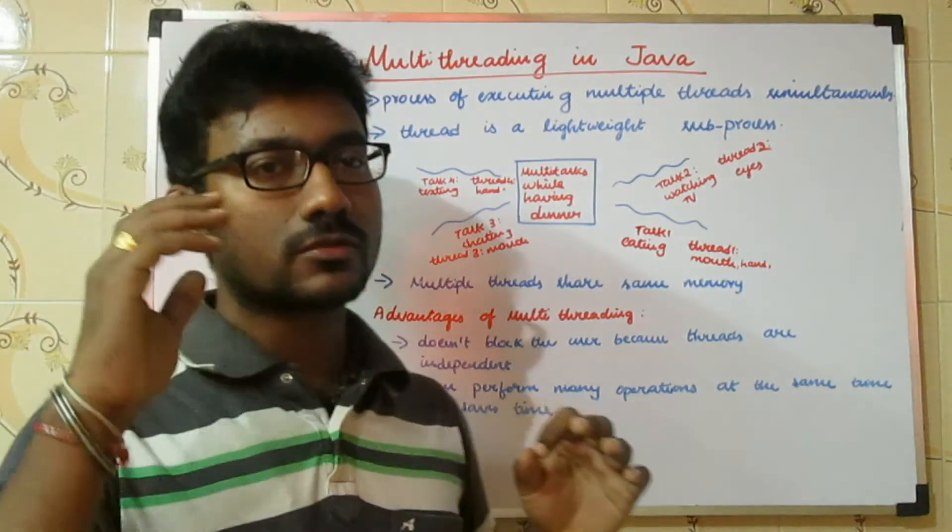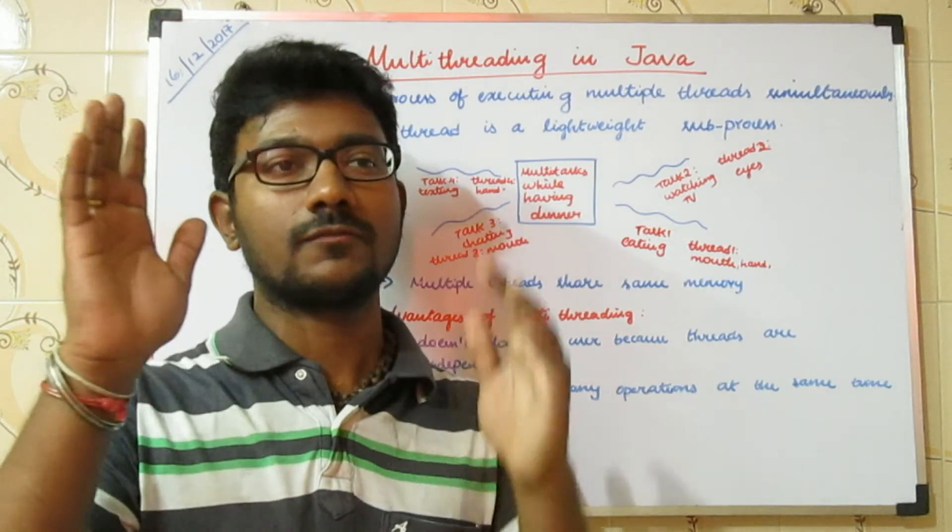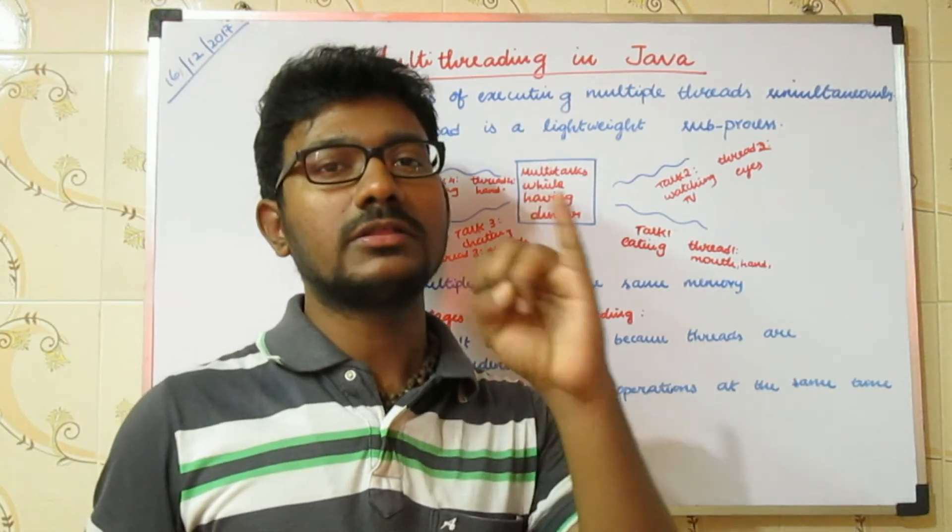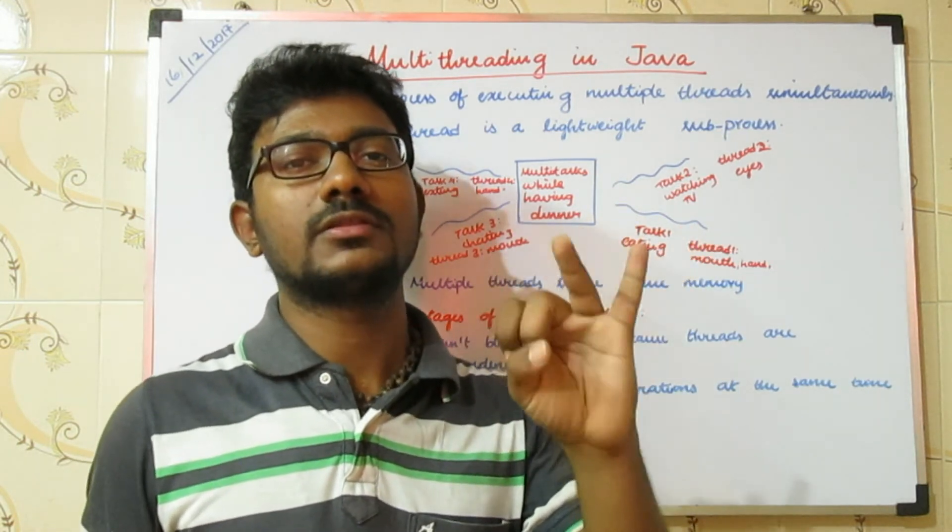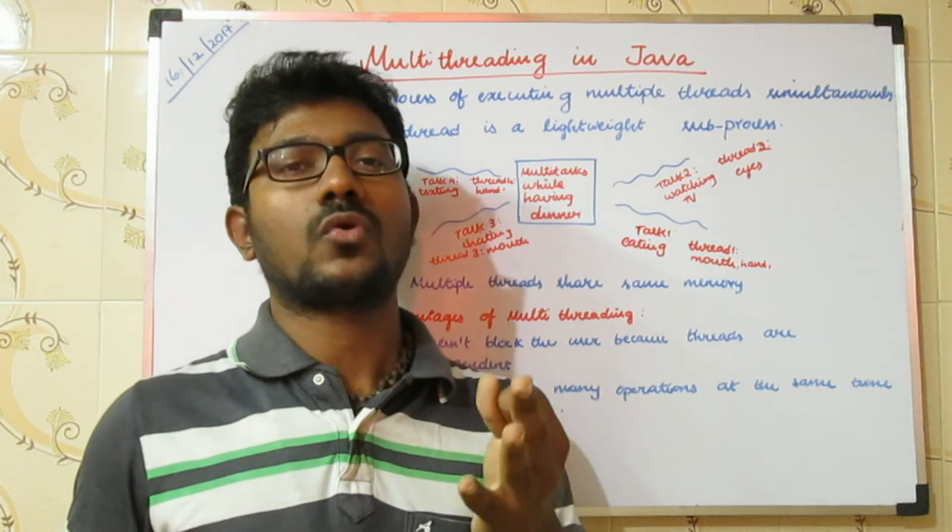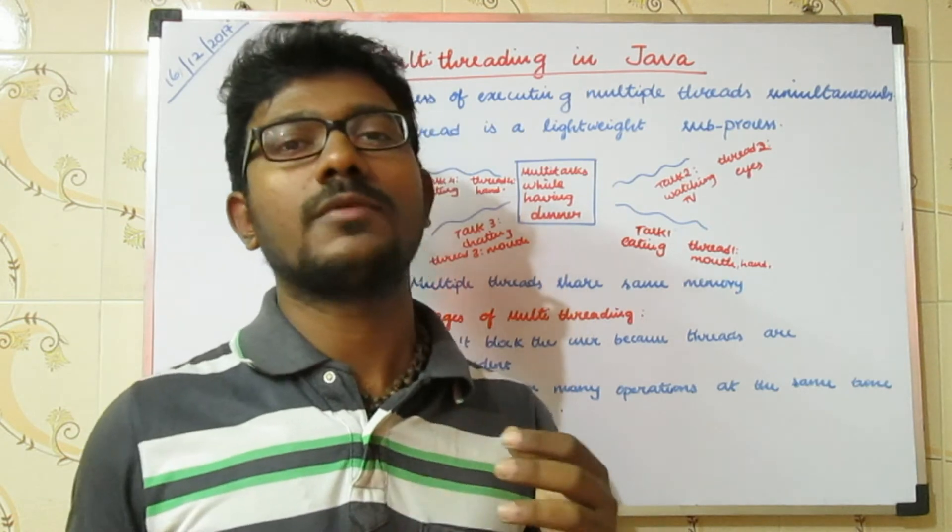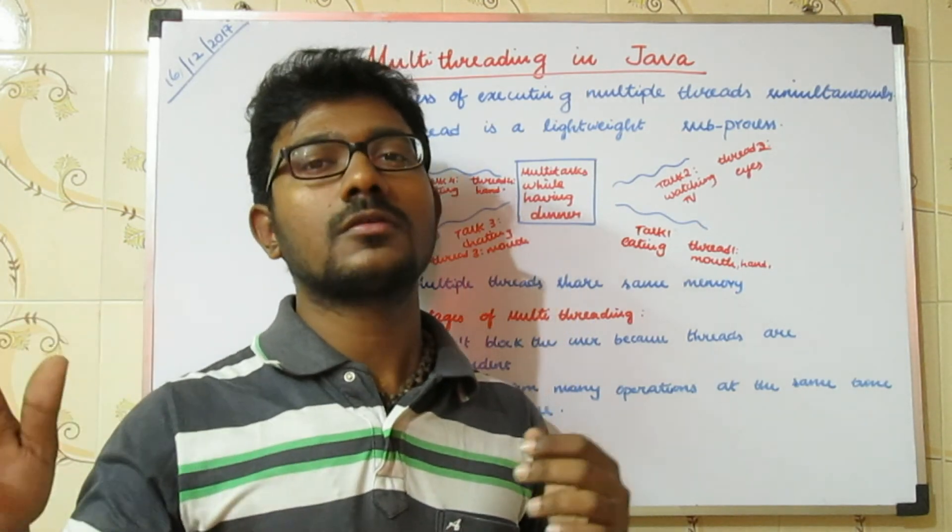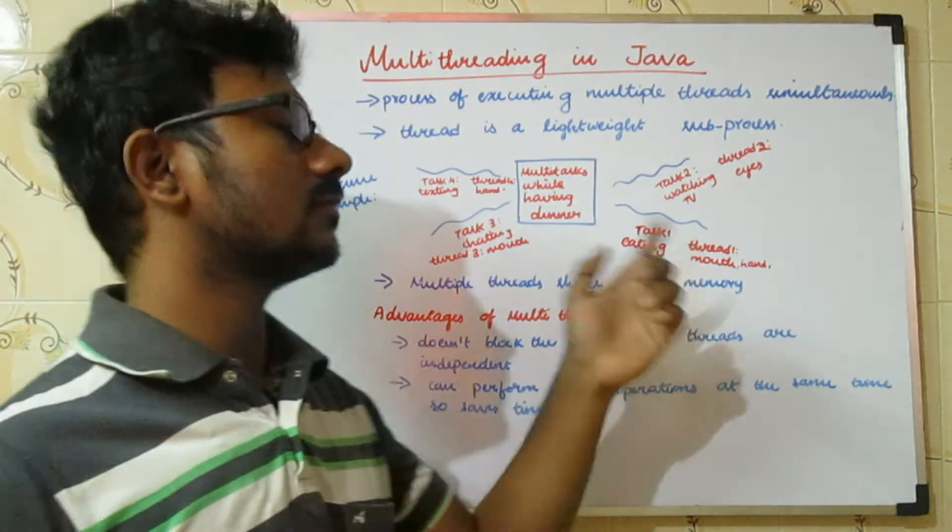If there is no multitasking, we need to first write the complete document, then manually click the save button, then the grammar check button, then the multi-user collaboration button. This consumes much time. Google Docs helps us save time, and it also saves memory because technically all the threads share the same memory. We will talk more about that in upcoming videos.